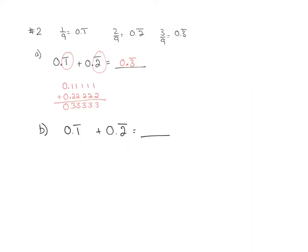Part B asks me to add them by changing them to fractions first, then adding the fractions and writing the sum as a decimal. So 0.1 repeating as a fraction is 1 out of 9, and 0.2 repeating is 2 out of 9. When we add them together, it would be 3 out of 9, which is the same thing as 0.3 repeating — the same answer we got in part A.